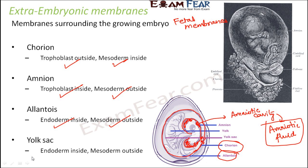The fourth membrane is the yolk sac, which is also mostly non-functional in humans. It is a sac-like structure containing the yolk, with mesoderm on the outside and endoderm on the inside. To summarize the composition: chorion has trophoblast outside and mesoderm inside. Since mesoderm is inside chorion, it is on the outside for all three other membranes — amnion, allantois, and yolk sac. Allantois and yolk sac have endoderm inside, while amnion has trophoblast inside.